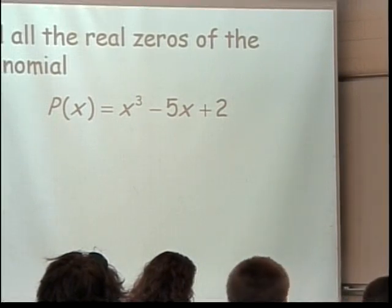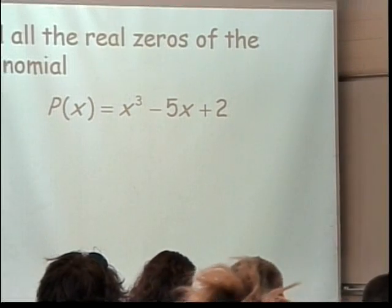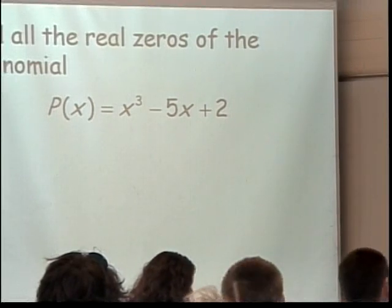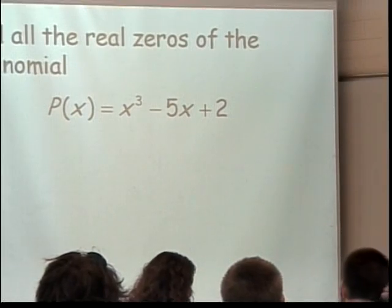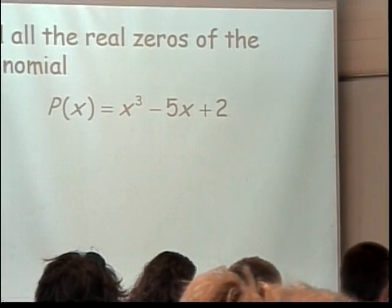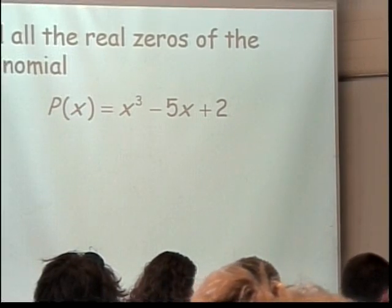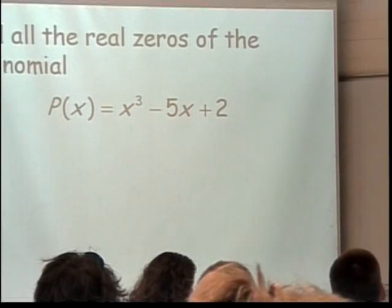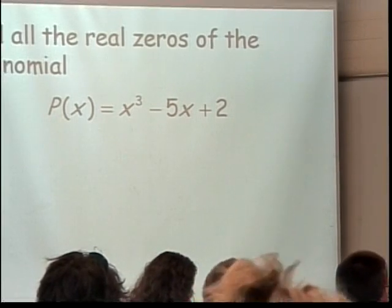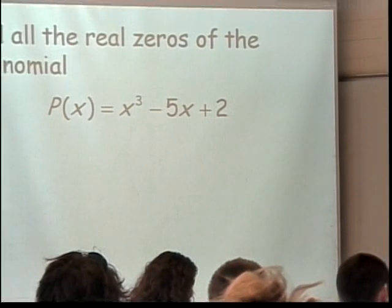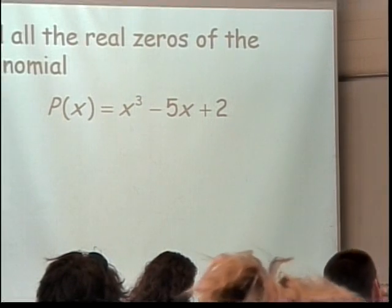So if you're using your synthetic division, you put a 2 on the outside. On the inside, you put a 1, and then what? 0 is your placeholder, and then the negative 5 and the 2. Bring down the 1. 2 times 1 is 2. 0 plus 2 is 2. 2 times 2 is 4. Negative 5 plus 4 is negative 1. 2 times negative 1 is negative 2. 2 plus negative 2 is 0. Yep, not only did it look good, but it really worked.